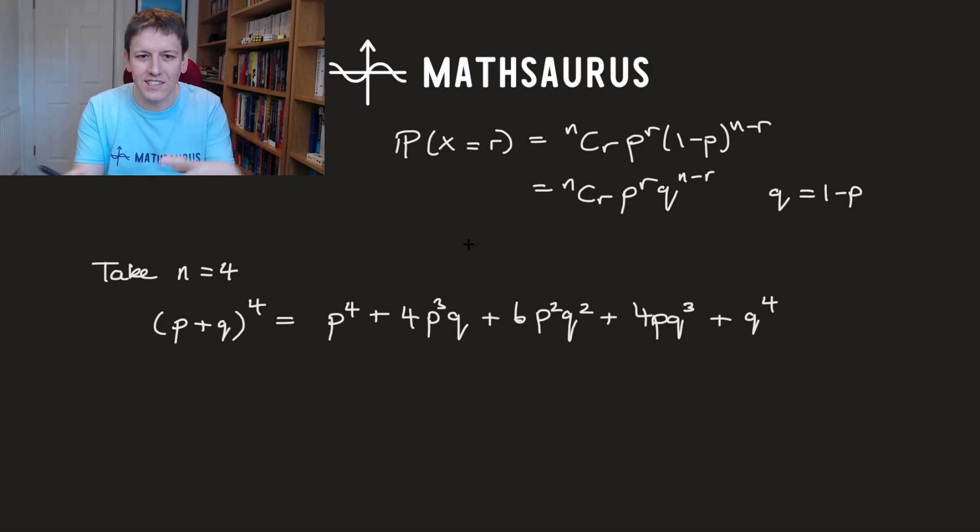But it's actually got hidden in it this entire binomial distribution, this probability distribution. Right, because p to the power of 4, if you took n equals 4 and r equals 4 in this formula, you get 4 choose 4 which is 1, p to the 4 and q to the 0. So actually this p to the 4 is just the probability that X equals 4 for our binomial distribution.